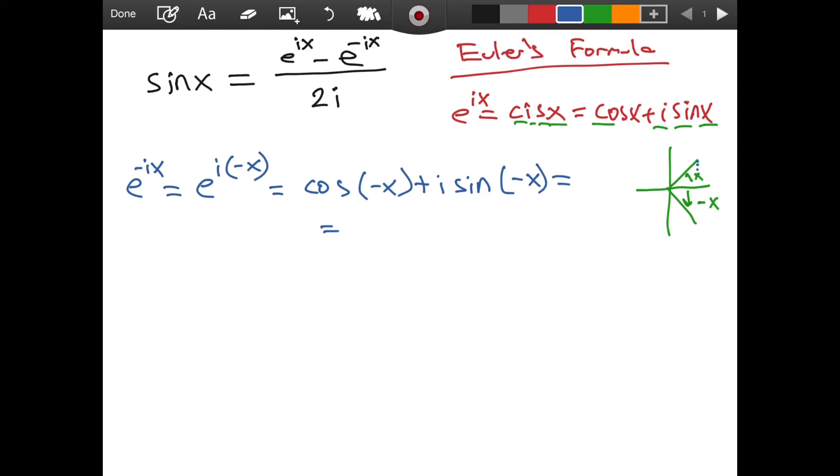It is just reflected over the horizontal axis, and the projection over the horizontal gives us the cosine. As we can see, cosine of x is equal to cosine of negative x, which means we can write just cosine of x, plus i.